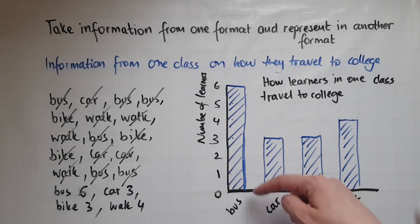So I could write it here. How learners in one class travel to college. It's really important that the title summarizes what the bar chart is about. And we shouldn't forget the numbers, what they mean and those at the bottom, which is the modes of travel in this case. We need to include every one of these that is in there. And the bars need to go up to how many learners there are who travel by bus, car, bike.